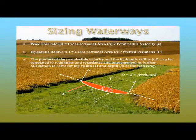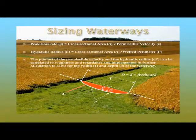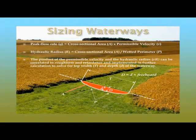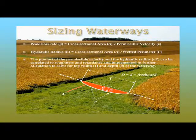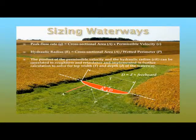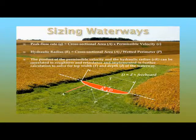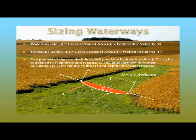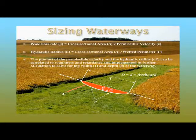We would also add some extra depth, or freeboard — essentially a factor of safety — onto the depth of the grass waterway. That provides a bit of extra protection to minimize water flowing out onto the landscape, ensuring water flows down the grass waterway where we have greater permissible velocity and greater resistance to erosion.